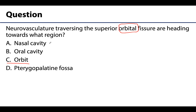The cribriform foramina are communicating with the nasal cavity region. The oral cavity and the pterygopalatine fossa we didn't get into as much here, but we will spend quite a bit of time in those regions in the future. That is what we have today regarding the cranial fossae and associated neurovasculature. Please feel free to reach out with questions and have an excellent day!